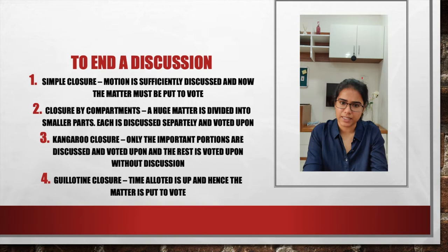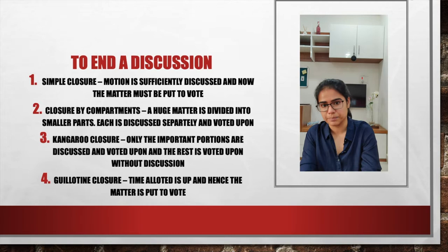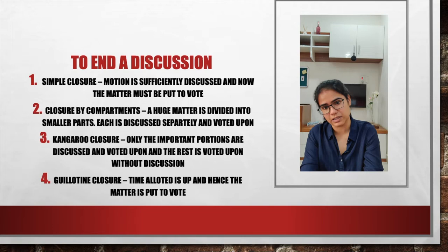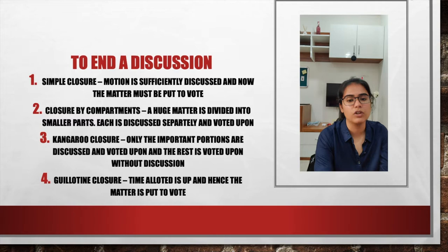The second type is closure by compartments. For a very large matter - like health in our example - we divide it into compartments: health administration, public sector, private sector, charitable hospitals. Each compartment gets its own separate discussion and voting. So first we discuss public hospitals, debate, vote, make changes. Then private hospitals - discuss, debate, vote. Then charitable hospitals - discuss, debate, vote. That's closure by compartments.